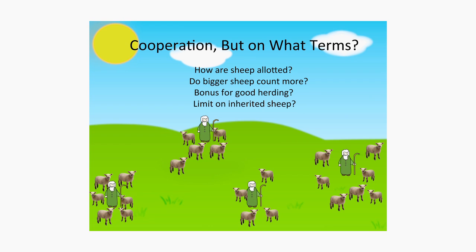What do you do? Well, you have to get the herders to limit the size of their herds. But there are many different terms on which cooperation can be achieved. How are sheep allotted? Does each herder get the same number? Does it depend on family size? Do bigger sheep count more than smaller sheep? What happens if you inherit a bunch of sheep? There are a lot of different ideas about how to cooperate and about fairness, and societies can be structured radically differently depending on their conceptions of fairness and how they're going to limit themselves in order to get along.